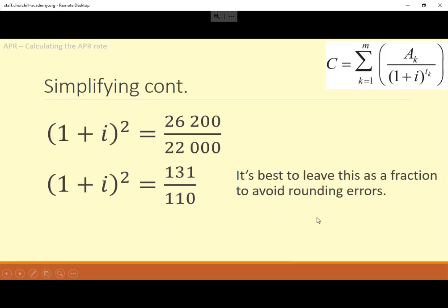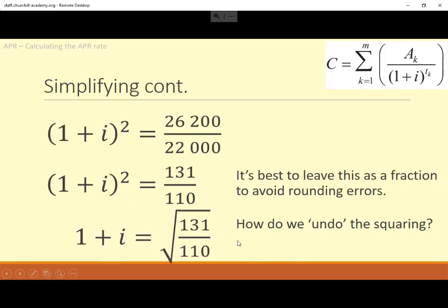Next up is to undo that squared. I would also, good reminder, leave it as a fraction. If you put it into decimals, it's probably going to be some horrible decimal number. Right, undoing that squaring then, square rooting undoes that. So it's the square root of 131 over 110, nearly there now.